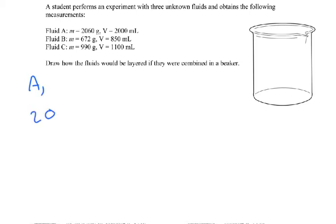So firstly let's do A, that's 2,060 divided by 2,000. So 2,060 divided by 2,000, and I get 1.03 grams per centimetre cubed.